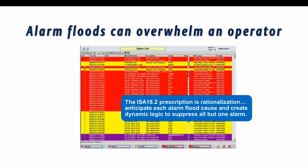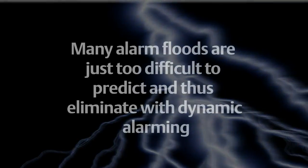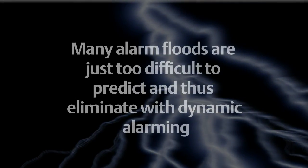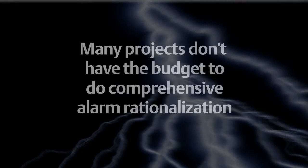The Delta V digital control system provides native mechanisms for implementing dynamic alarming. However, there is a problem with alarm rationalization in that many alarm floods are just too difficult to predict, and many projects don't have the budget to do a comprehensive alarm rationalization.